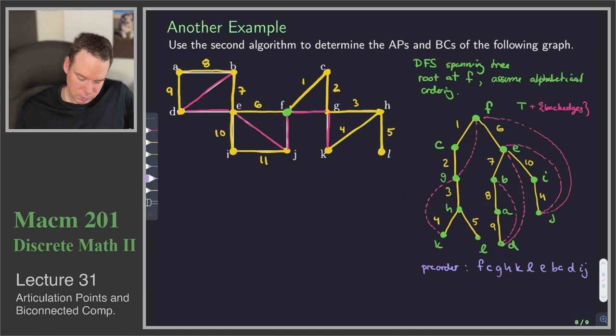We can imagine a little pointer walking us along as we go through it. And all I do is for each vertex as I move along this traversal, I process the vertex, the back edges coming down from them, and then updating their labels. So for F, sitting here at F...